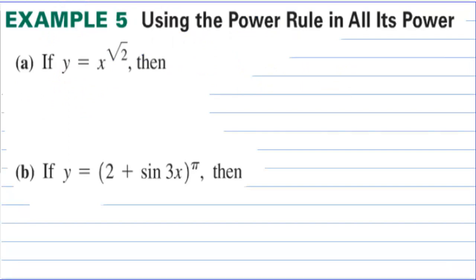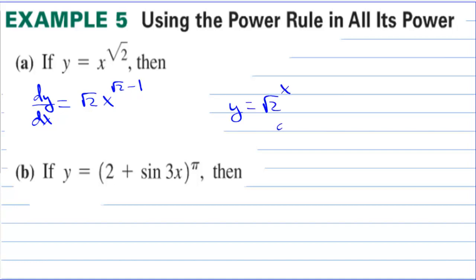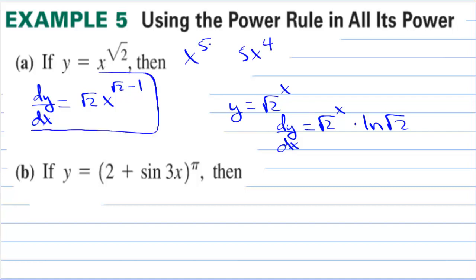Using the power rule in all its power: if y equals x to the square root of 2, then dy/dx equals the square root of 2 times x to the square root of 2 minus 1. But if it's the other way around — y equals square root of 2 raised to the x — then the derivative is square root of 2 to the x times the natural log of the square root of 2. That's a power function versus an exponential function, like x to the fifth giving 5x to the fourth.